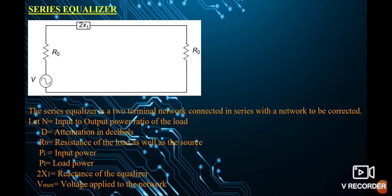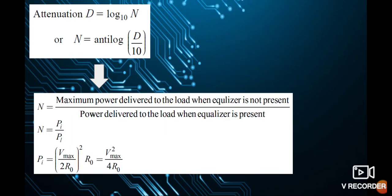Pi is the input power, PL is the load power, 2X1 is the reactance of the equalizer, and Vmax is the voltage applied to the network. The attenuation in decibels is given by D = 20·log₁₀(N), and taking the antilog gives N = antilog(D/10).